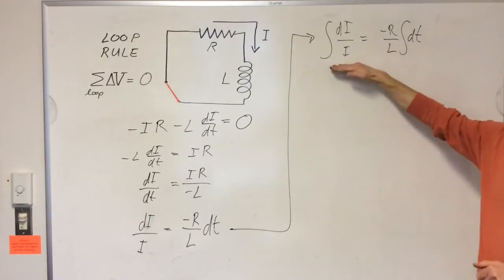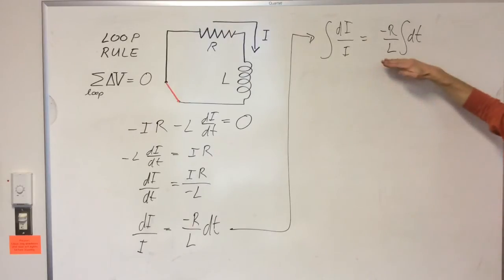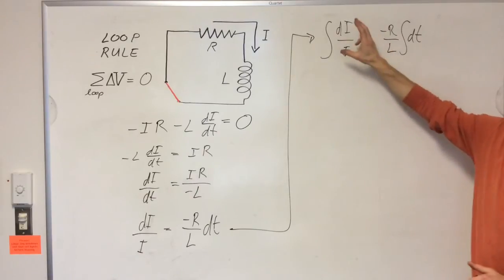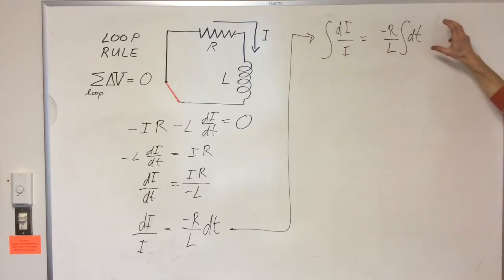Now the integral of the left-hand side will be the natural log of i. The integral of the right-hand side will be minus r over l. Integral dt is just t. We'll have a constant of integration over here and one over here. We can combine those constants of integration on the right-hand side. So we get this result.